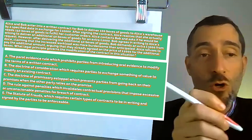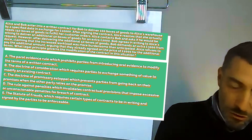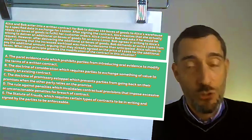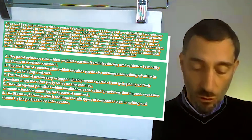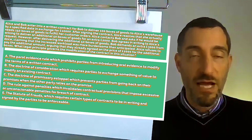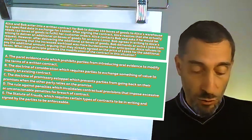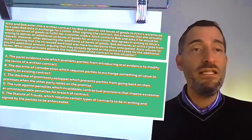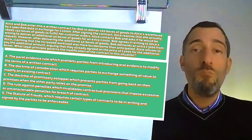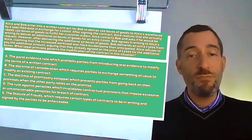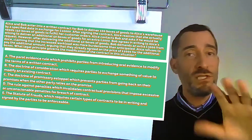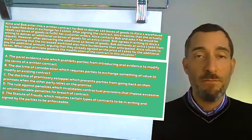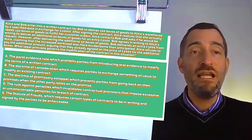The correct answer is option B, the doctrine of consideration. What has happened here is the traditional scenario of a contractual modification. We had an original contract that was 100 boxes for £10,000, and this contract has been modified to 150 boxes for £12,000. In order to have a valid modification, we need the provision of additional consideration from both sides of the deal. Each party must be providing something new — Bob is providing more boxes of goods and Alice is paying more money — so the contract has been effectively modified.